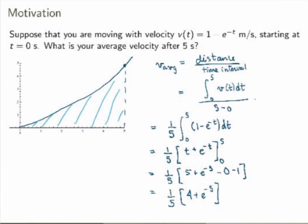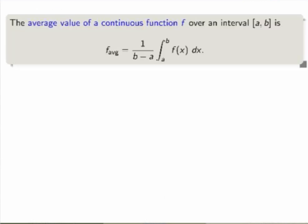This is the average velocity over these 5 seconds — it's just a number, not a function anymore. This is really the average velocity over this particular time interval. So this was pretty easy, but what we've done here is completely general. In general, the average value of a continuous function f over an interval a to b is always given by 1 over (b minus a) times the integral between a and b of f dx. This is how we define the average value of a continuous function.